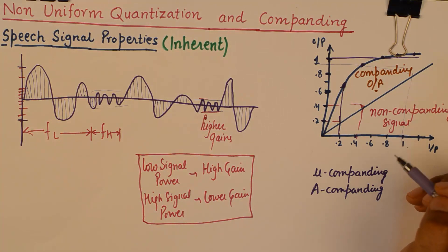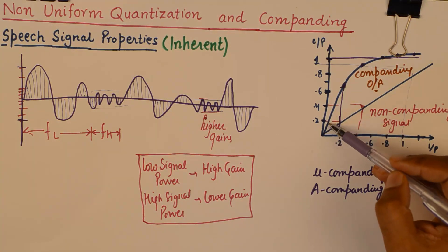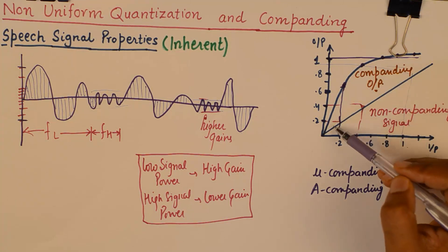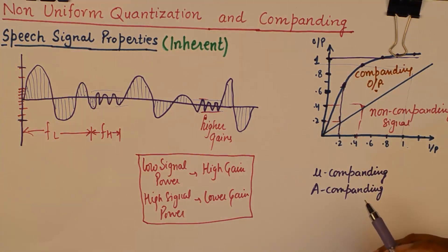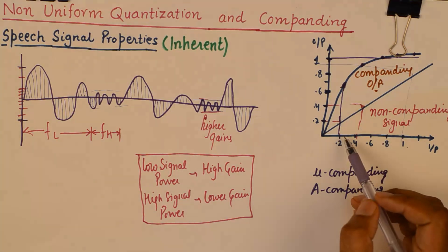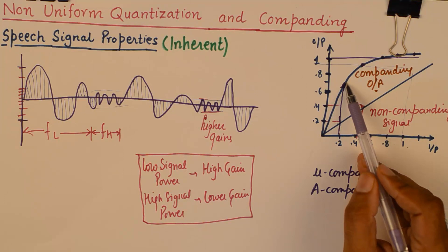Now, if you look at this slope, this is the output of a compander. Now, what compander does is, it is boosting the low power signals by higher gains.